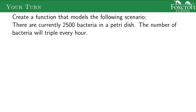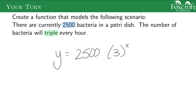There are currently 2,500 bacteria in a petri dish, and the number of bacteria will triple every hour. Try to create this function on your own. The first question: is it exponential or linear? If I'm tripling, that means I multiply by 3, so it's exponential. I start at 2,500 bacteria — that's my starting point — and the thing I'm multiplying by is 3. So the exponential function that represents this scenario is 2,500 times 3 to the x.